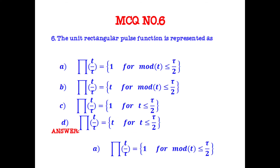The unit rectangular pulse function is represented by which expression? The first expression is correct: φ(t/τ) = 1 for |t| ≤ τ/2. The modulus of t denotes that the amplitude of the signal is 1 between −τ/2 and +τ/2. So the answer is option A.